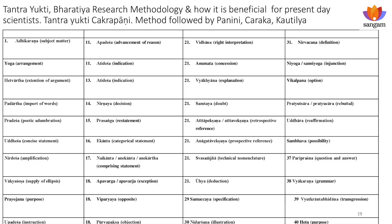Where does this lead us? We have about 9,000 Induscript inscriptions now. To analyze it, we have a remarkable analytical tool called the Tantra Yukti, documented by Chakrapani. This tool was used by great scholars like Panini who wrote the Ashtadhyayi, Charaka who wrote the Charakasamhita, and Kautilya who wrote the Arthashastra. Consisting of about 40 compositions of textual interpretation — interpretation of phenomena — linked together into a research methodology called the Tantra Yukti.